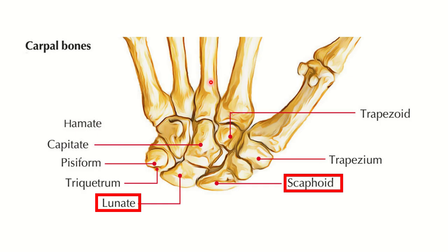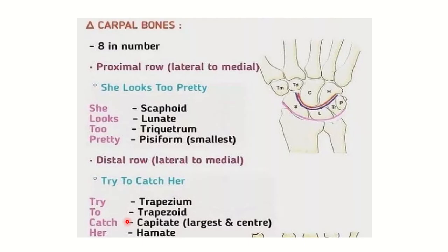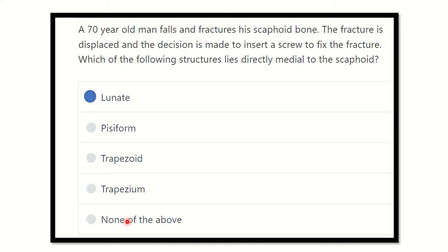So looking at the diagram, immediately medial to the scaphoid bone is the lunate bone. Our final answer is the lunate bone, which lies immediately medial to the scaphoid bone. Thank you all.